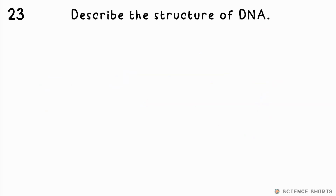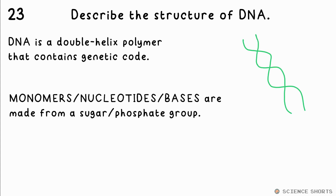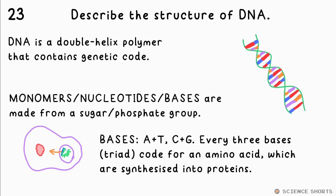Describe the structure of DNA. It's a double helix polymer. You also need to know the bases or nucleotides: A and T always go together, and C and G do too. These are all made from a sugar phosphate group. Every three bases code for an amino acid, and the sequence of these determines what proteins are synthesized.